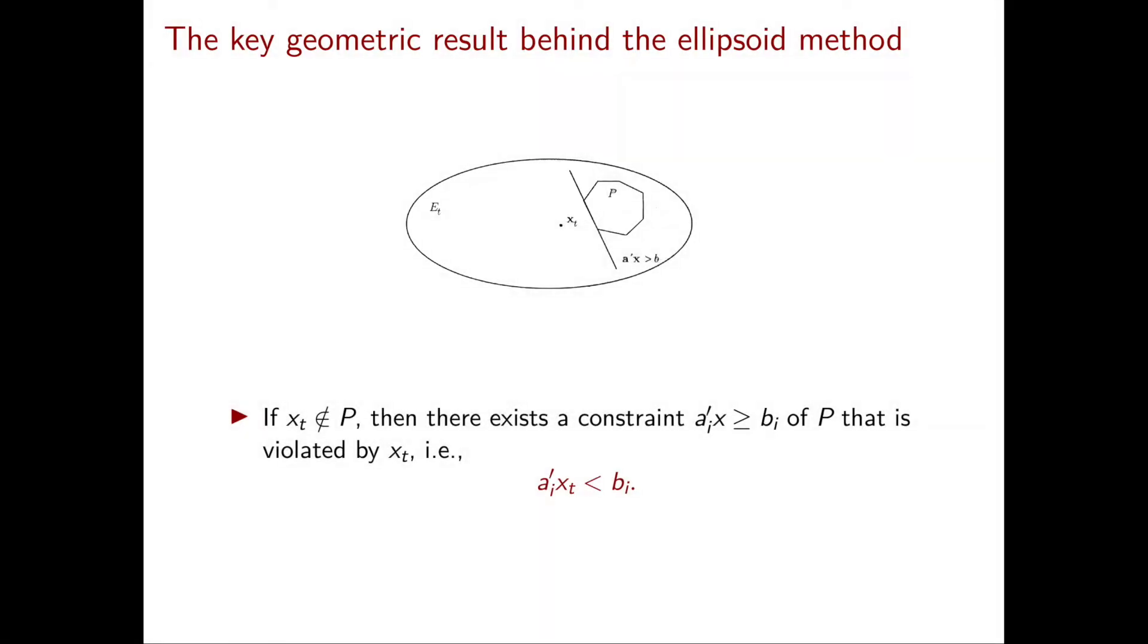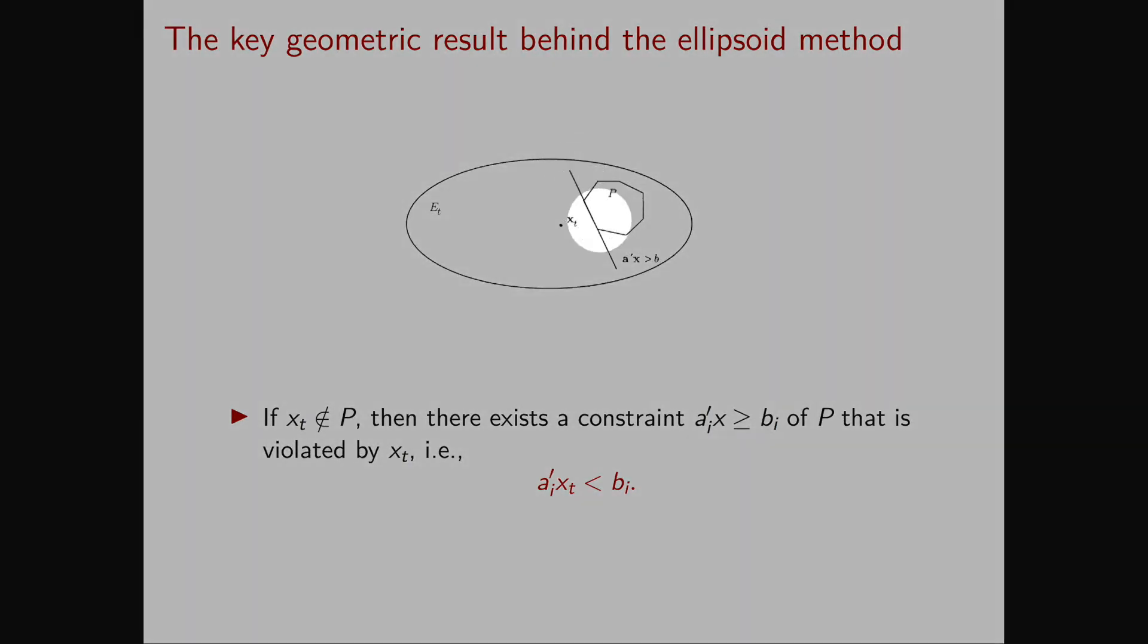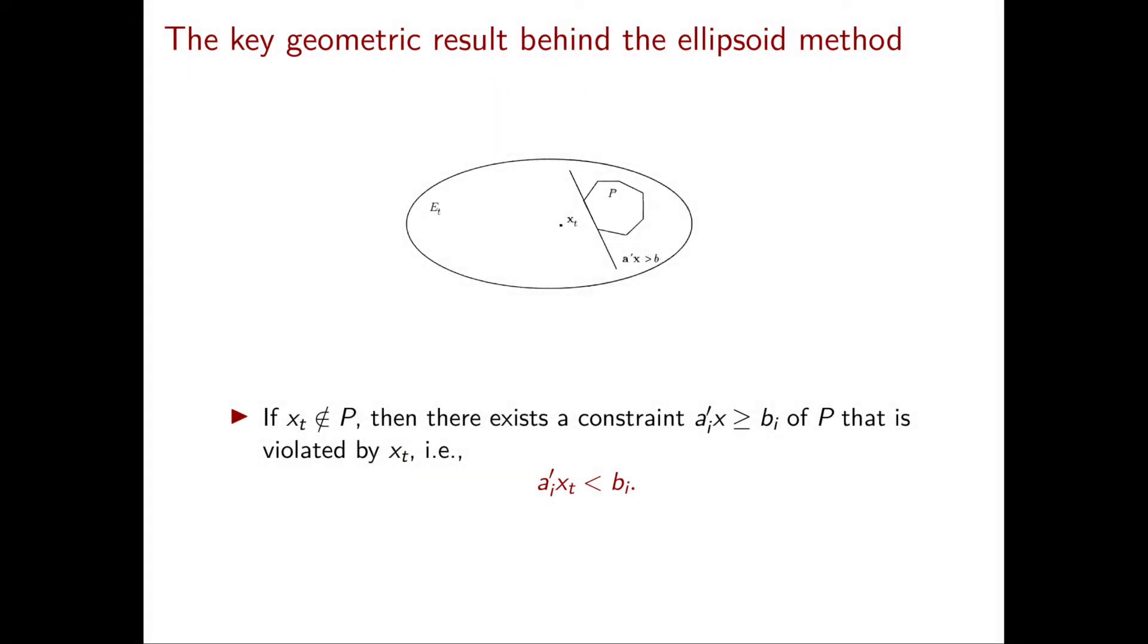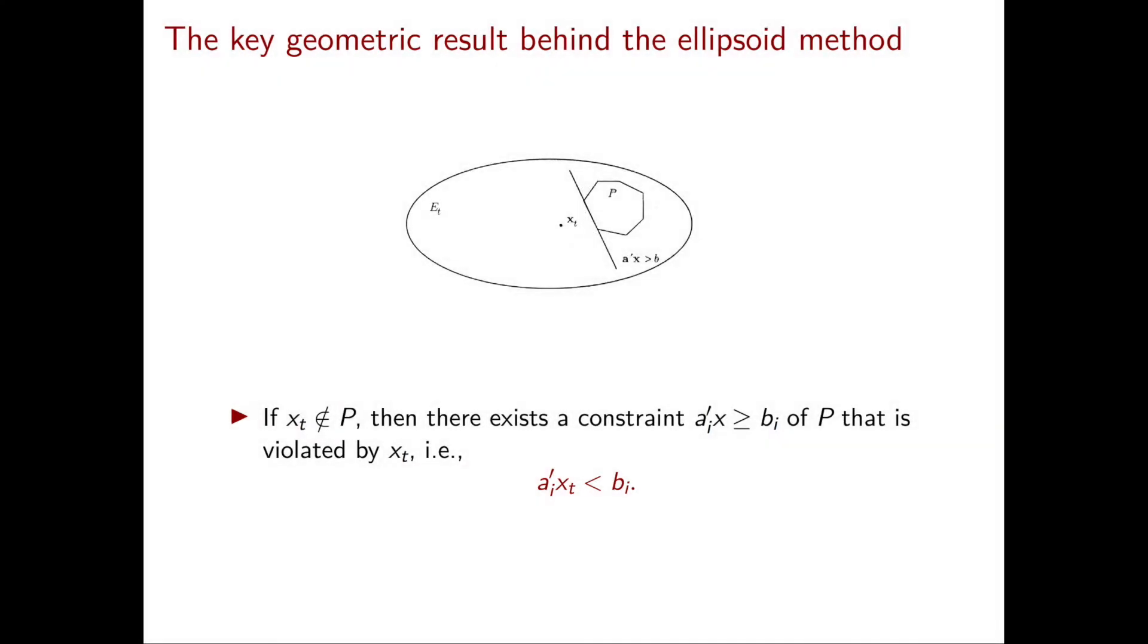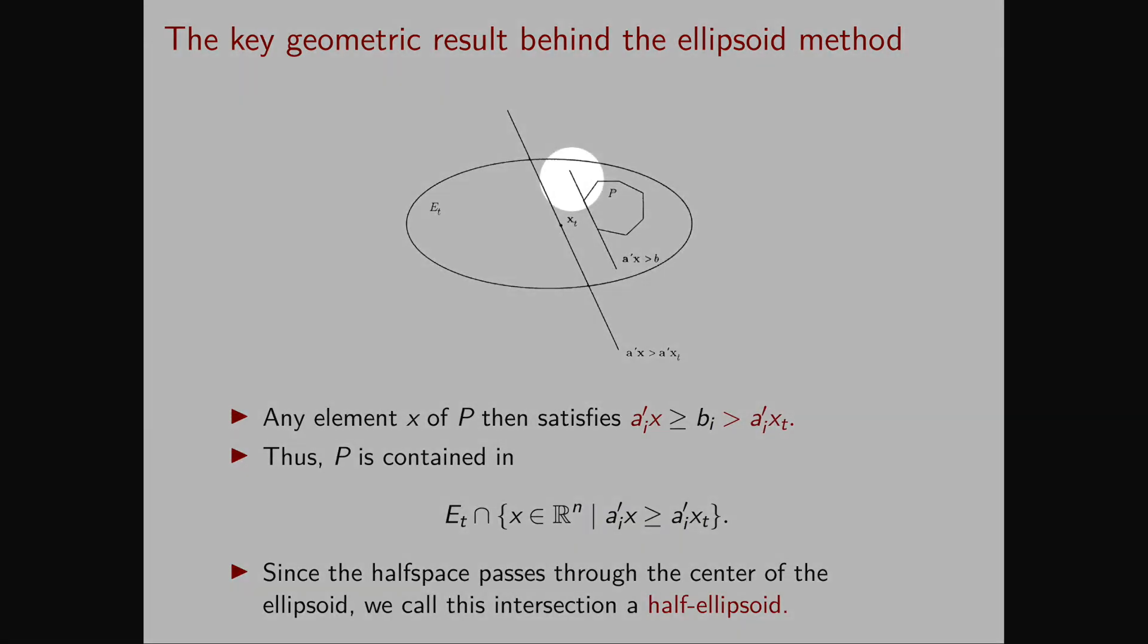Otherwise it means that there exists a constraint that defines P that is not satisfied by the vector x_t. In our picture an example of such a constraint is this linear inequality here. As you can see it is one of the inequalities that defines P and the vector x_t doesn't satisfy it.